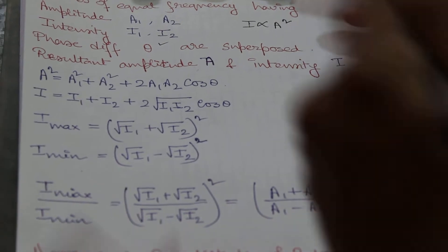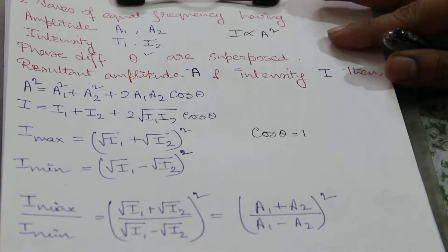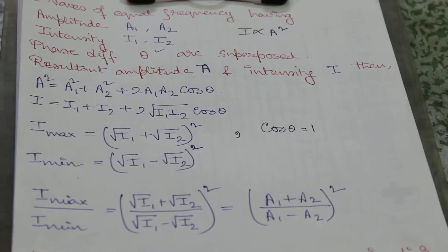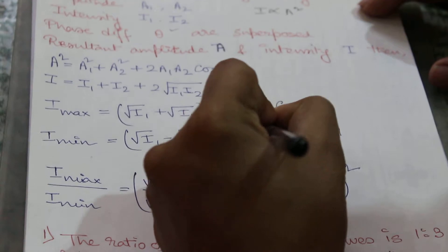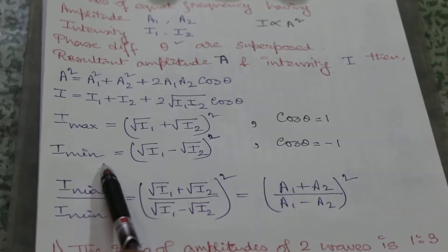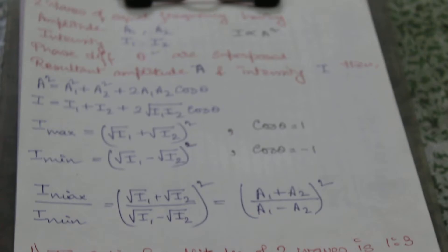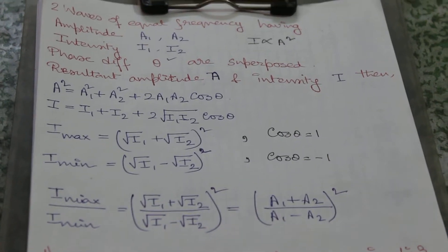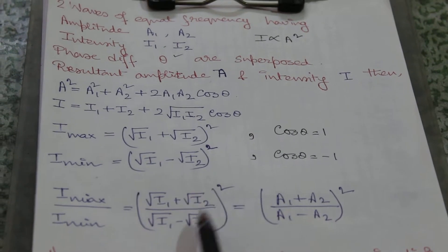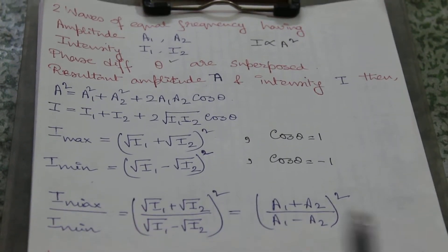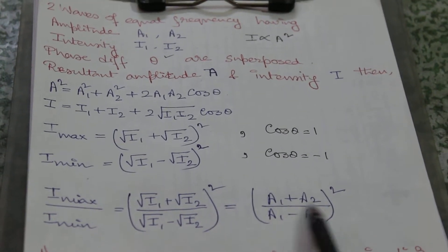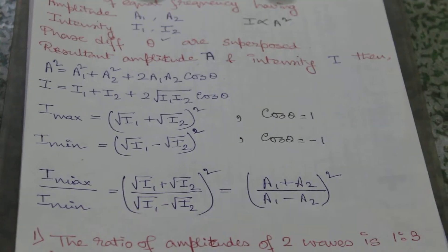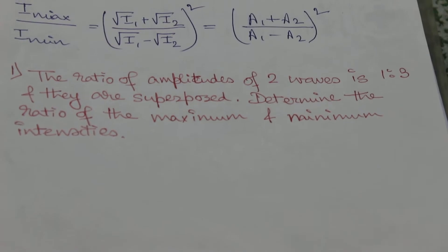When cos(theta) equals 1, the intensity has a maximum value: I_max = (√i1 + √i2)². When cos(theta) equals −1, the intensity has a minimum value: I_min = (√i1 − √i2)². Their ratio is: I_max / I_min = (√i1 + √i2)² / (√i1 − √i2)², which also equals (a1 + a2)² / (a1 − a2)².